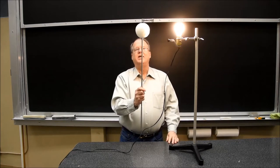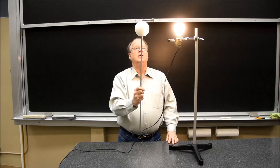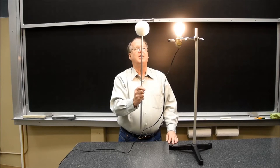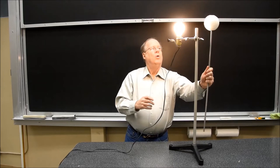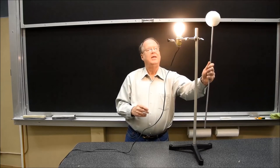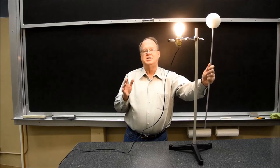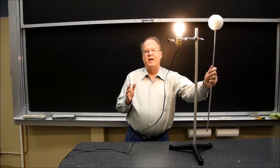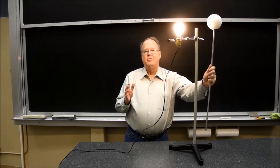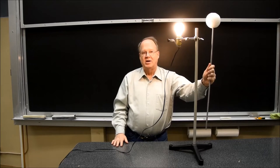I think you can see that regardless of whether the moon is on one side of the sun or on the other side of the sun, it's the side of the moon that is facing the sun that is illuminated, and the side of the moon that is away from the sun that is in darkness.